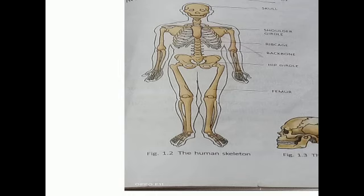Dear students, let us learn more about the skeletal system. How many bones does an adult have? Can you guess the number of bones an adult has? An adult has 206 bones. They are of different sizes and different shapes, not the same size or same shape.